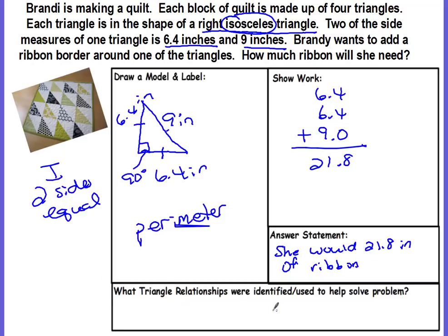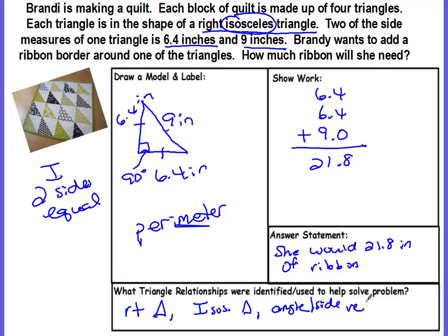What triangle relationships did we use to solve this problem? We used the fact that it was a right triangle, that it was an isosceles triangle, and we used the angle-side relationship we learned in this video. There was a lot of important information — all the things we've learned from this unit put together in one problem.